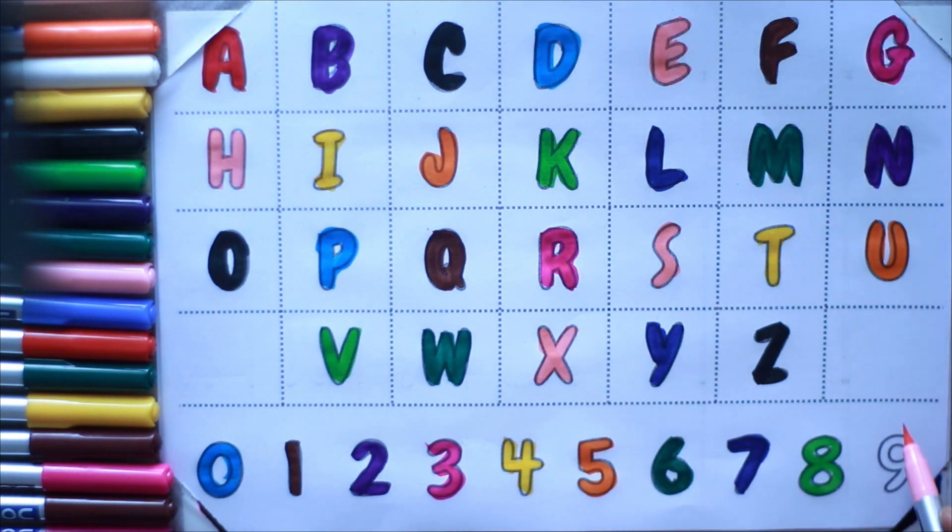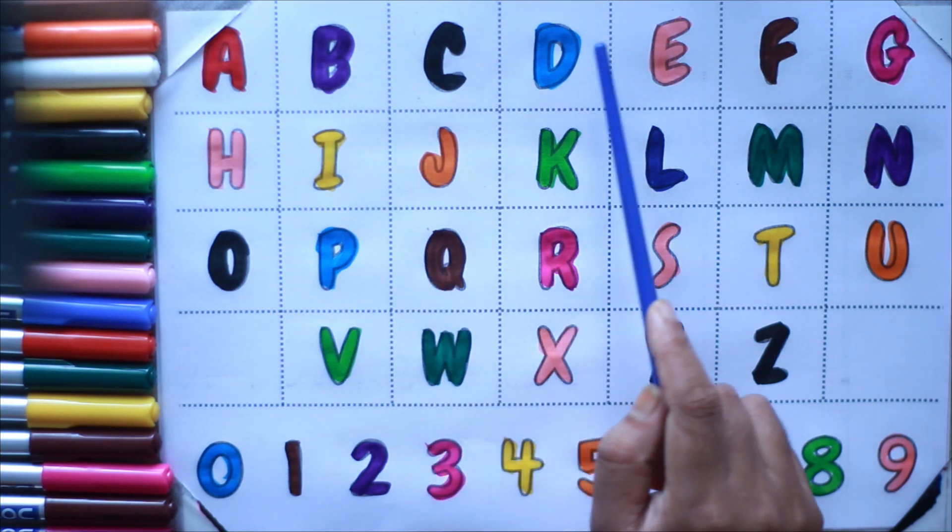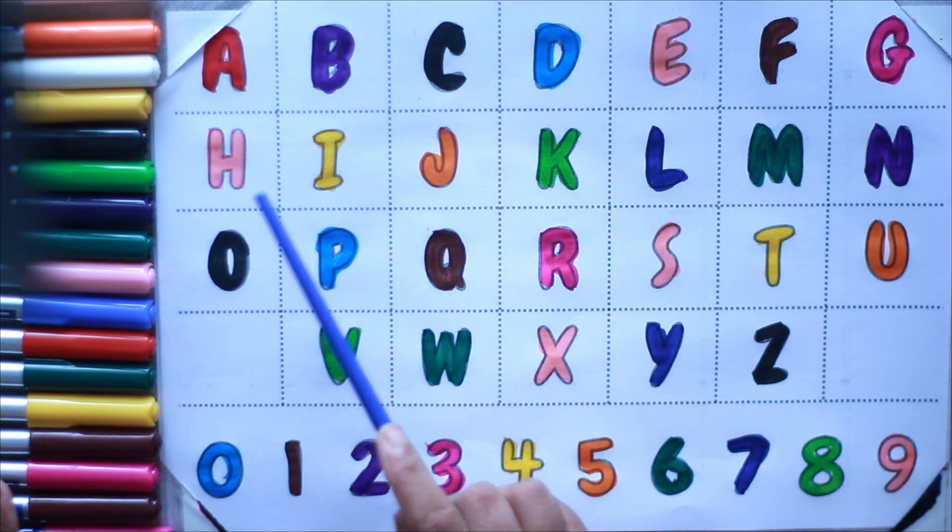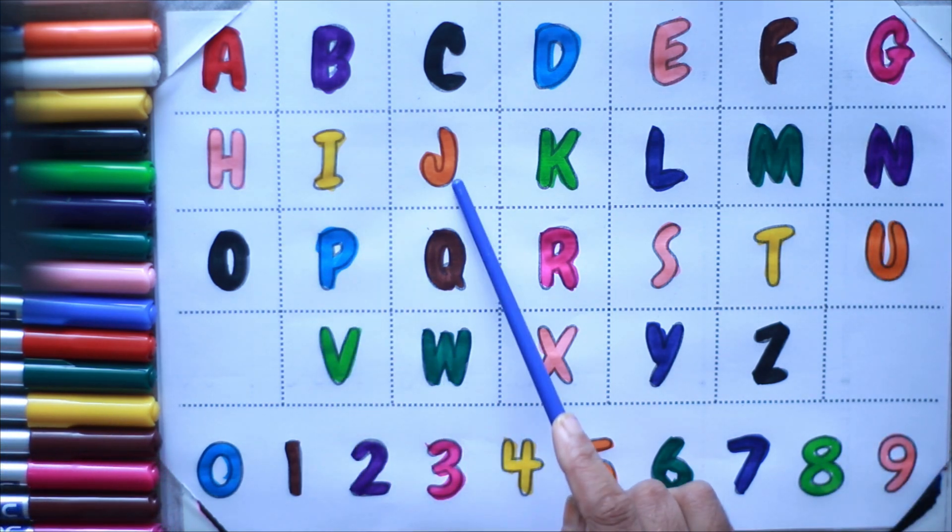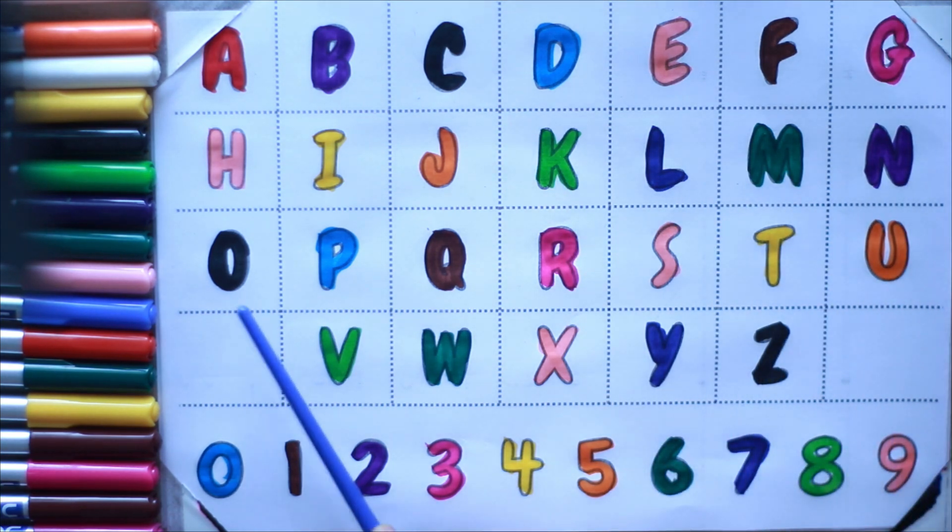Let's say again. A, B, C, D, E, F, G, H, I, J, K, L, M, N, O, P, Q, R, S, T, U, V, W, X, Y, Z. Zero, one, two, three, four, five, six, seven, eight, nine.